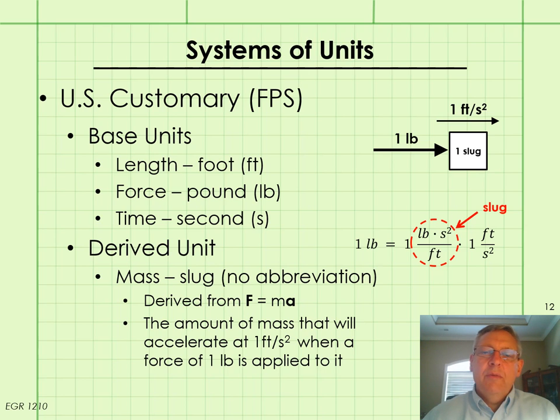Let's look at the second system of units that we need to know how to work in. We call this the U.S. customary system or FPS for foot, pound, second. The base units in FPS are length, force, and time, foot, pound, and second. The derived unit is mass, and the unit of mass is known as the slug. There's no abbreviation for slug. We derive the unit of mass from Newton's second law, F equals ma, just like we did in the SI case.